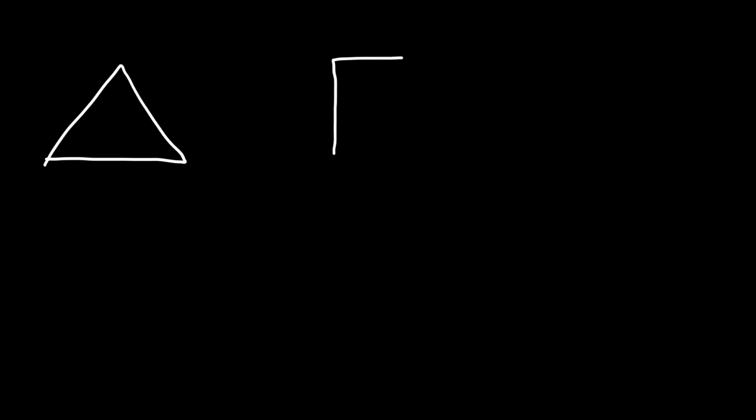In this video, we're going to talk about polygons. A polygon with three sides is known as a triangle. A polygon with four sides is a quadrilateral. Now, if we're dealing with regular polygons, all four sides are congruent and all angles are the same, which makes this particular quadrilateral a square.